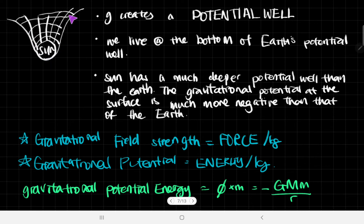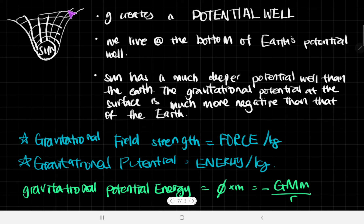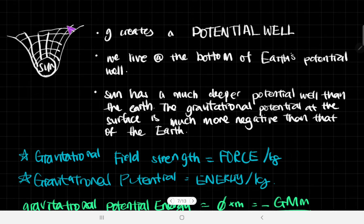When we look at it in a more 3D drawing, this is what it would look like — it looks like a well. It looks like you put a marble in the middle of a trampoline and it kind of bends like this. So we say that this is a potential well because it does look like a well.